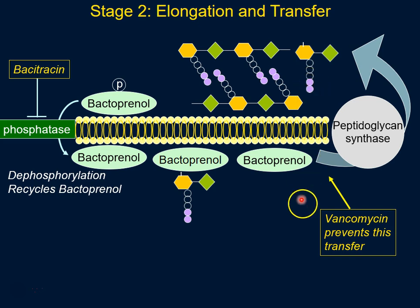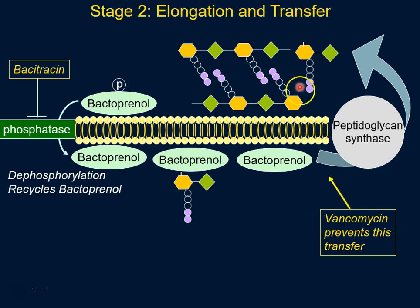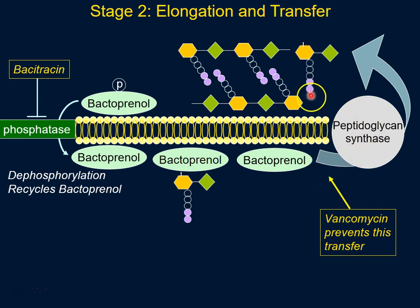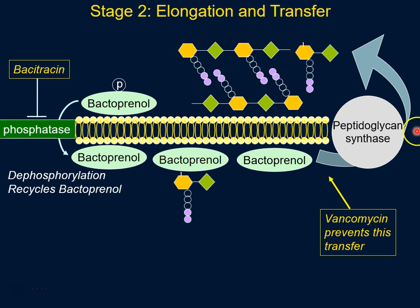Vancomycin does that by clinging on to the last two alanines. It does not inhibit the enzyme; rather, it interferes with this process by attaching itself to the last two amino acids. That's essentially how the elongation and transfer process occurs in stage two.